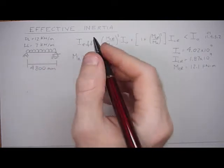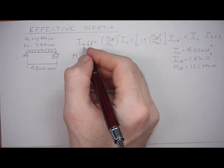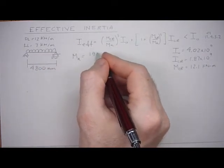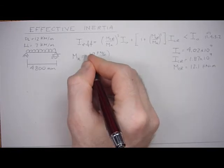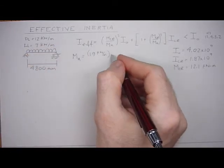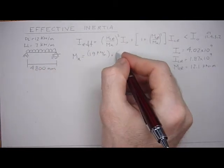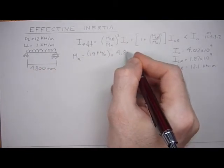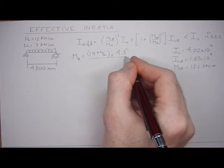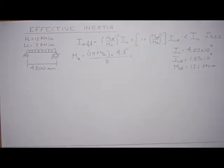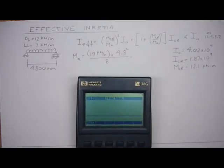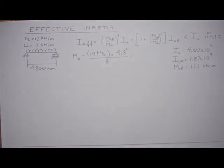So 12 plus 7 is the load in kilonewtons per meter. That's 19 kilonewtons per meter times the span 4.8 meters squared over 8. So 19 times 4.8 squared divided by 8 is 54.7.